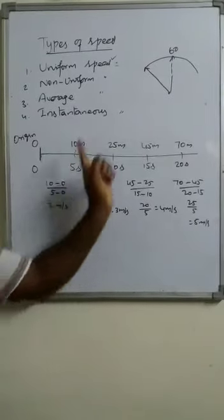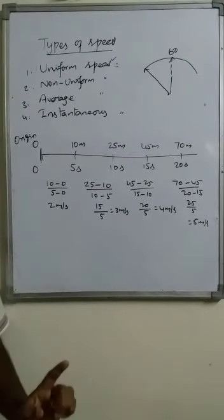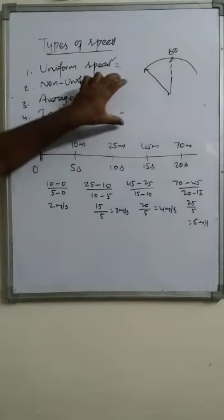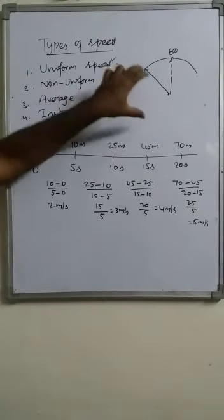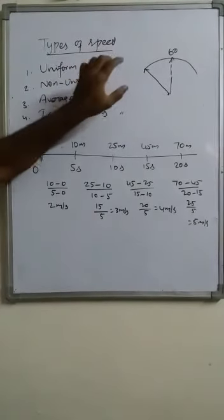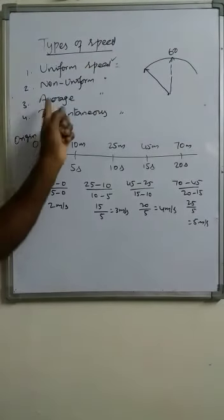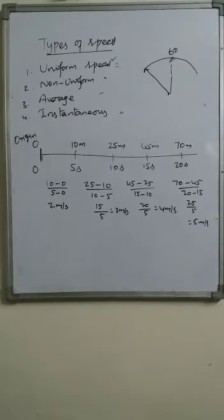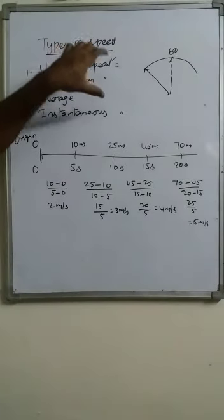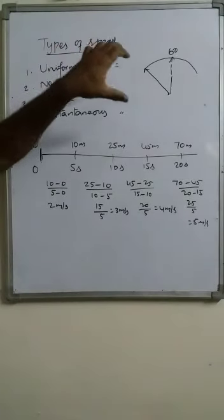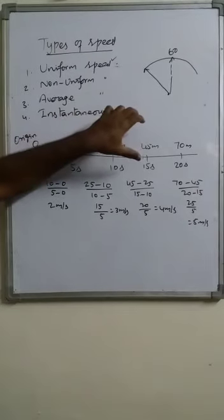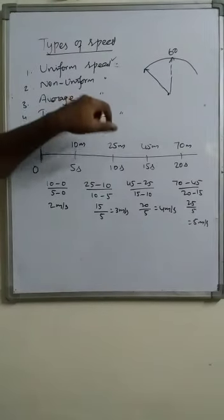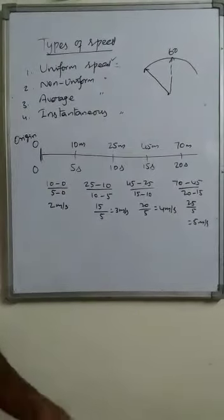So this is about uniform motion and uniform speed, and non-uniform motion and non-uniform speed. These are the two types of speed we discussed. The remaining two speeds — average speed and instantaneous speed — we will discuss in the next session.